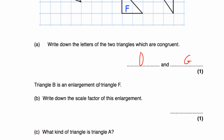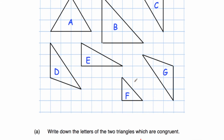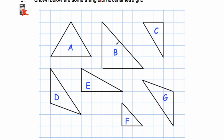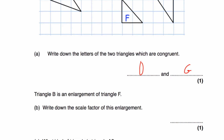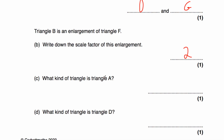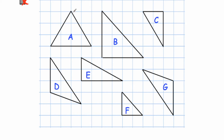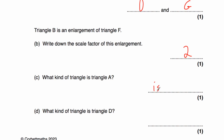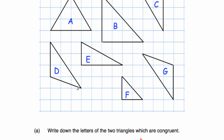Triangle B is an enlargement of triangle F. Write down the scale factor of enlargement. F has a base of two and a height of two. B has a base of four and a height of four. We've doubled both lengths, so the scale factor is two. Part C: what type of triangle is A? A is an isosceles triangle — two sides of equal length and two equal angles. Part D: what type of triangle is D? Triangle D is scalene — three unequal sides and all different angles.